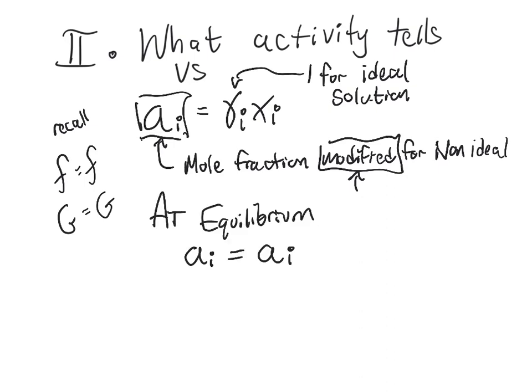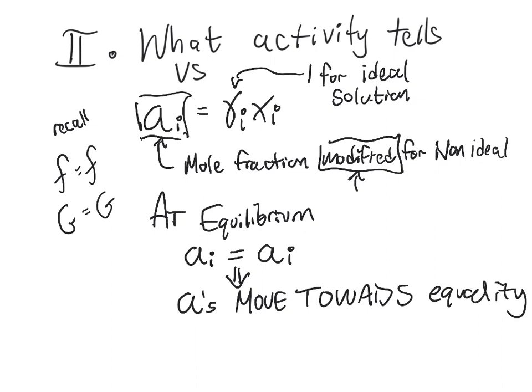So for example at equilibrium we have the activities being equal which means that activities move, activities will move towards equality. It tells us about the driving force. So if you have someplace where there is a lot of something and someplace adjacent to someplace where there is less of it, it moves in that direction.